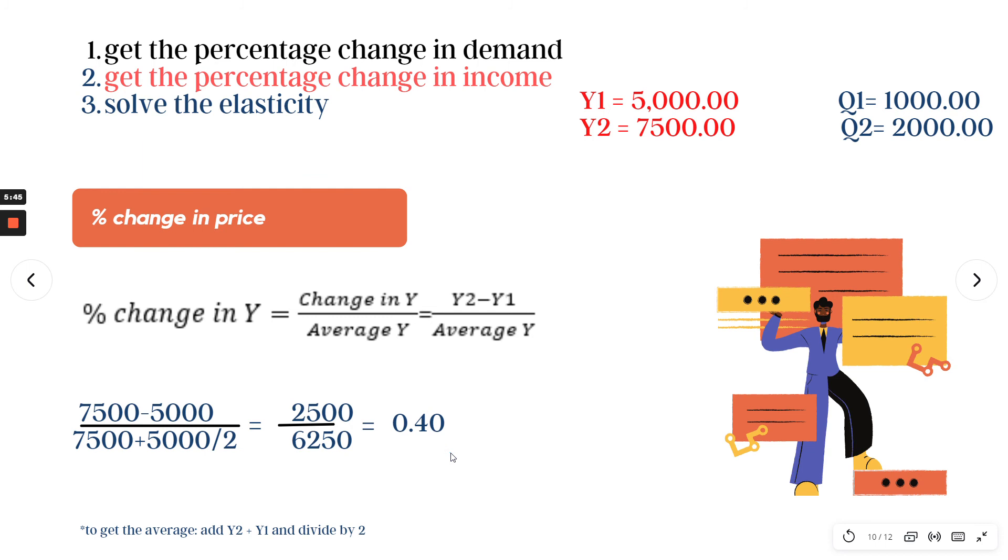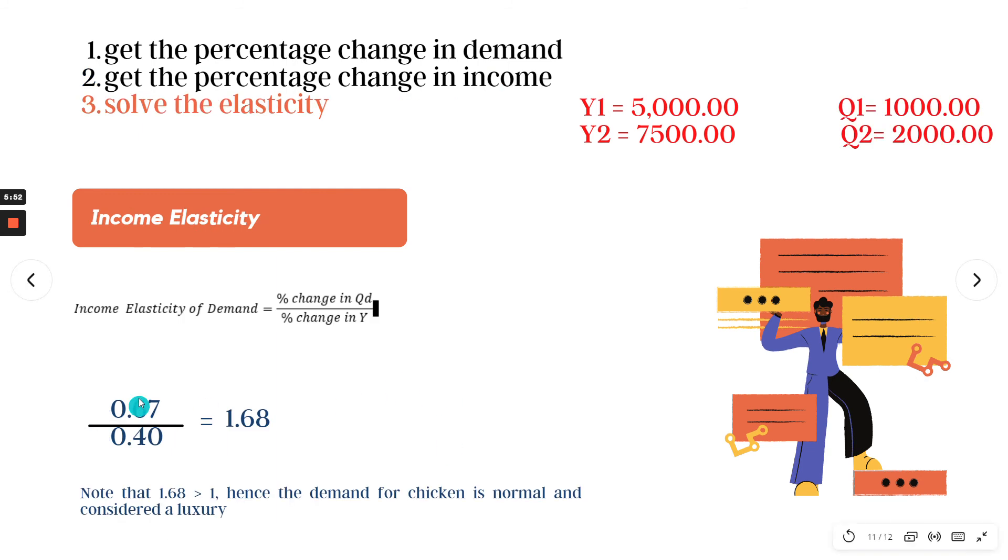How are we going to know if it's a necessity? We have to solve for the elasticity of the income. We have the income elasticity of demand is the change in quantity demanded over the percentage change in income. That is 0.67 over 0.40, which is equivalent to 1.68. We have to note that 1.68 is greater than 1. Hence, the demand for chicken is normal and it is considered a luxury.